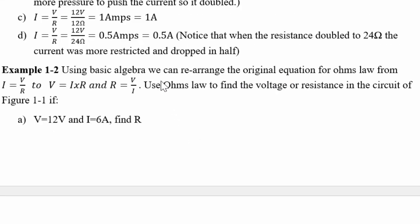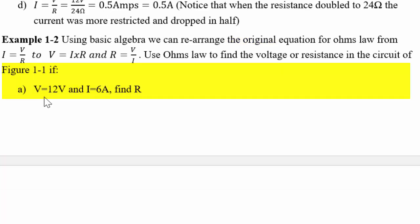But if we use algebra, we can rearrange that equation. From I equals V over R, we could rearrange it and get V equals I times R. And with a little algebra, we could also come up with R equals V over I. So here are a few more examples. Why don't you try these on your own. If we're given the voltage of 12 volts and the current of 6 amps, find the resistance.